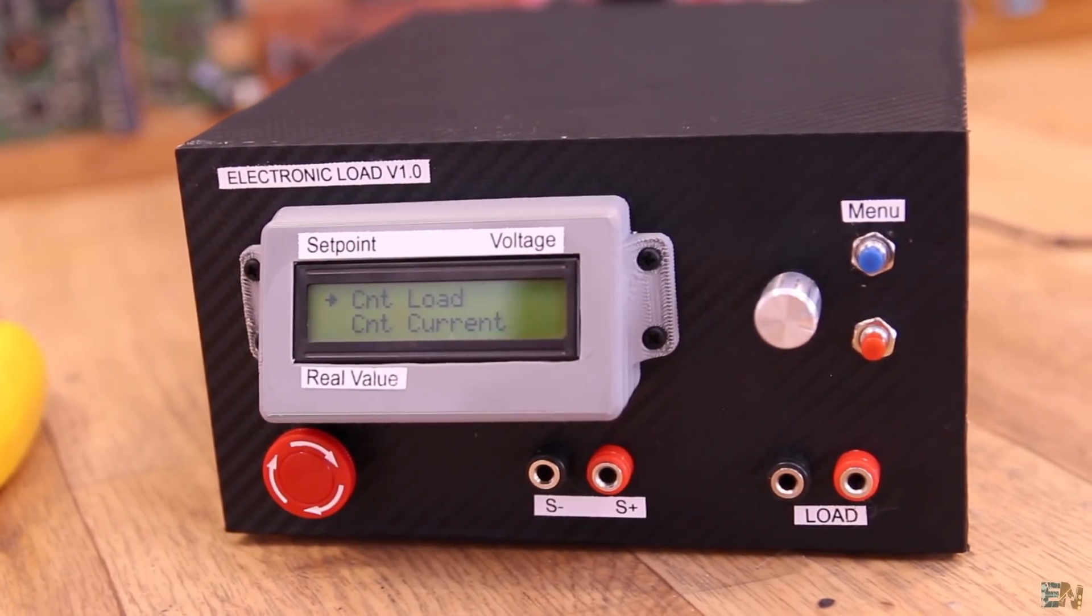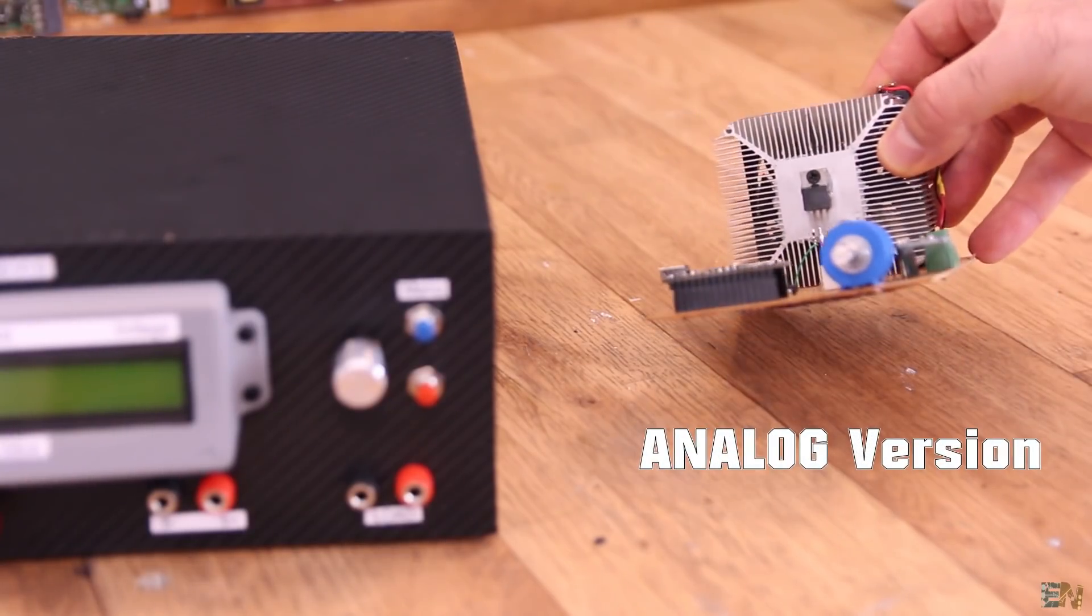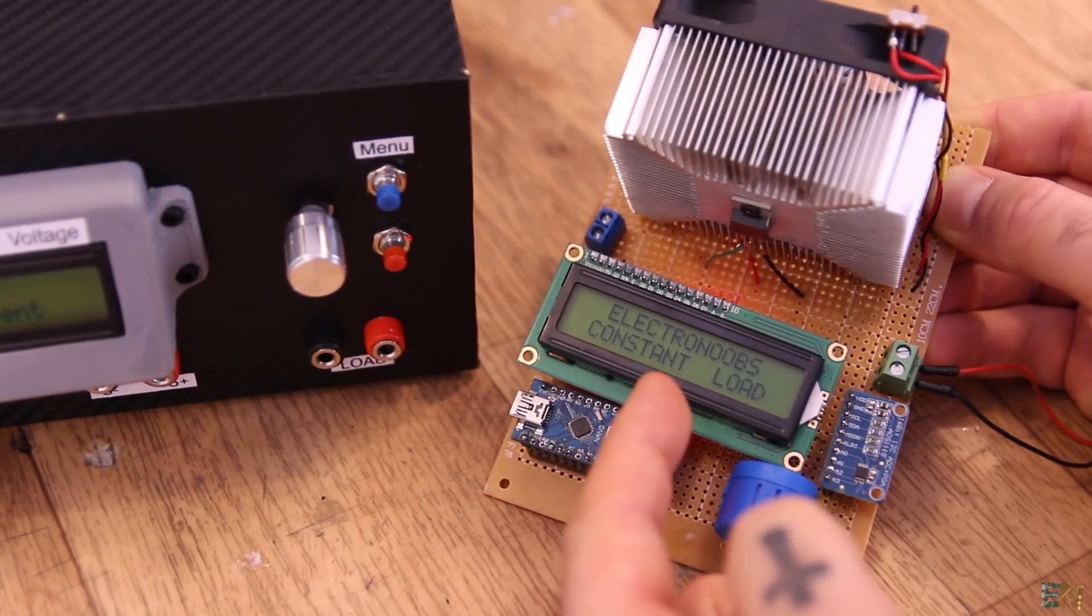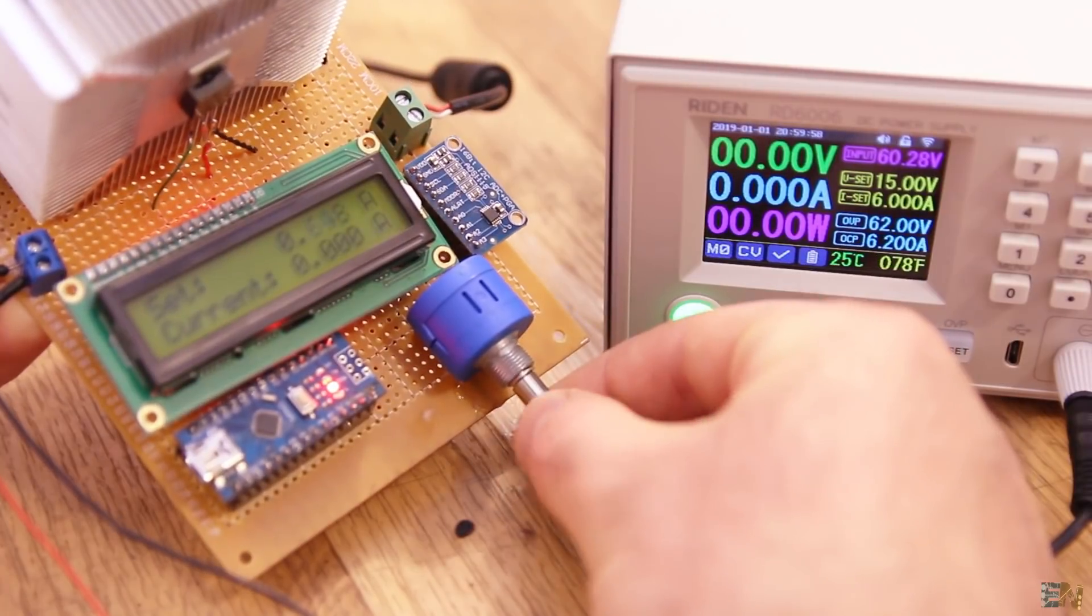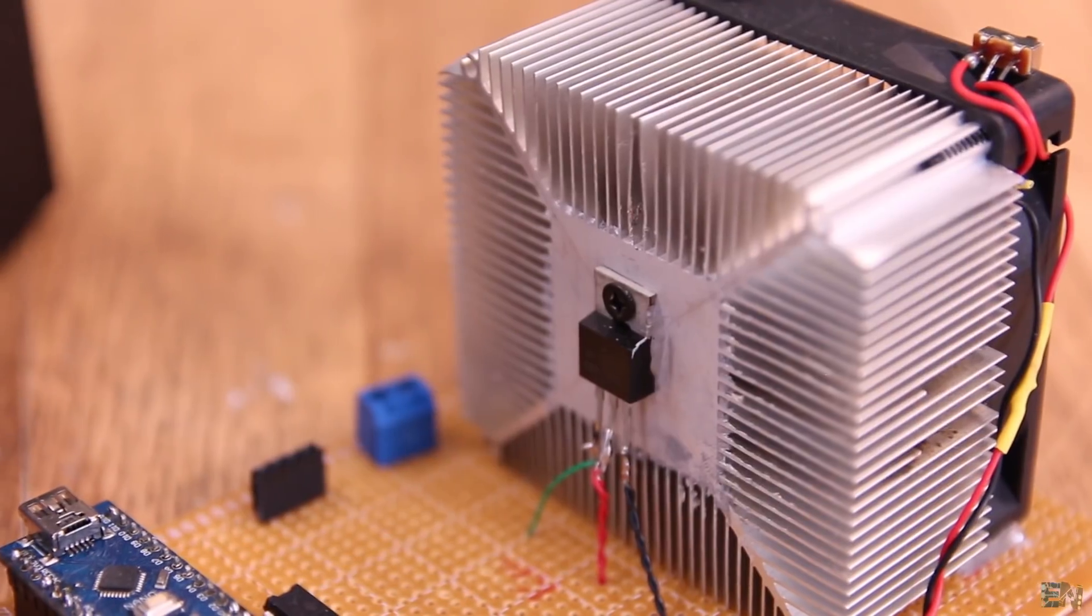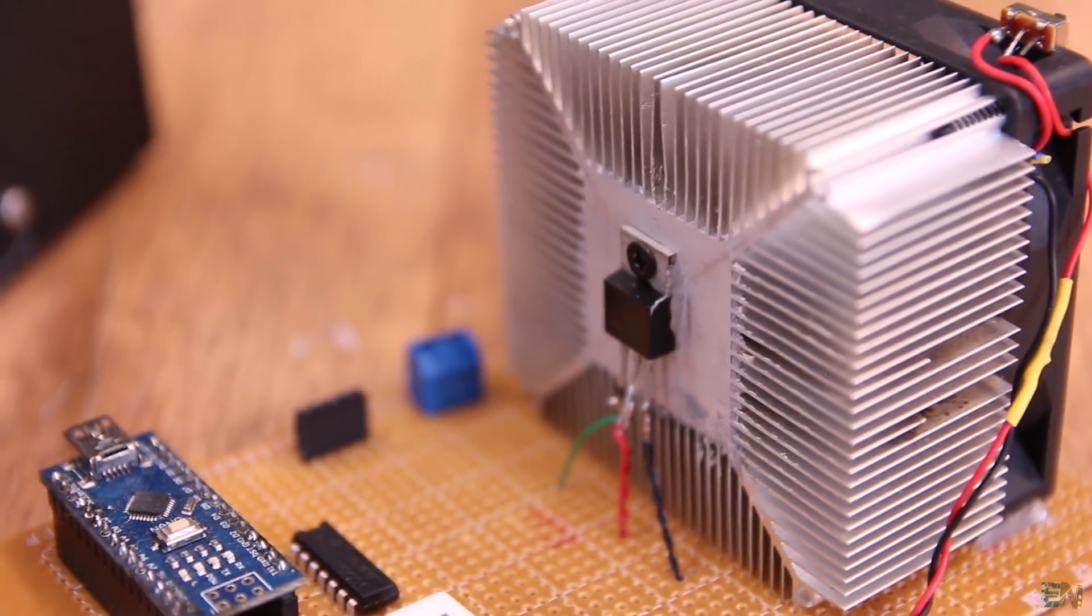In a previous video I made the analog version for this device and had very good results. I was able to get fixed current values from 10mA up to 5A and the MOSFET was always cool because I was using a big heat dissipator with a cooling fan.